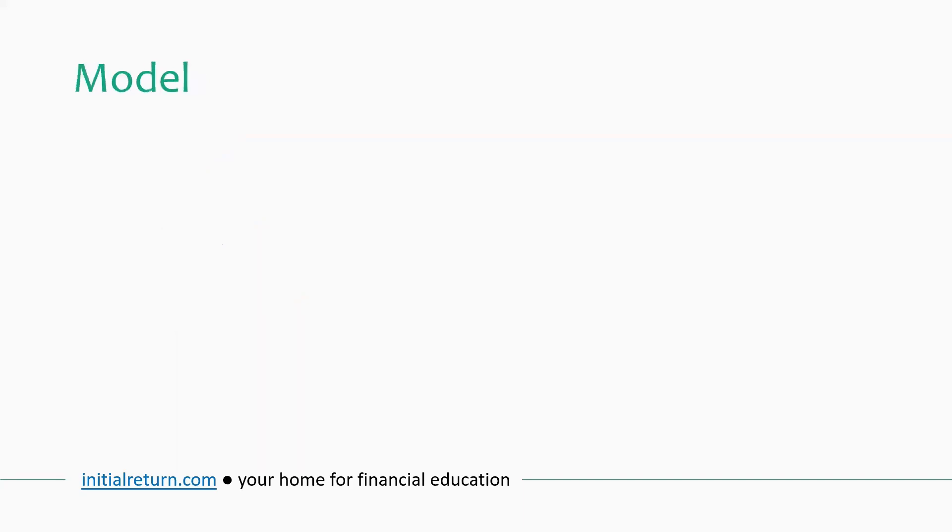To understand the CAPM model, we need to do a very quick recap of portfolio theory. Portfolio theory basically says that investors care about risk and return of stocks, bonds and any risky asset. So let's say we have expected return here, our measure of return, and our measure of risk is the standard deviation of returns or return volatility.